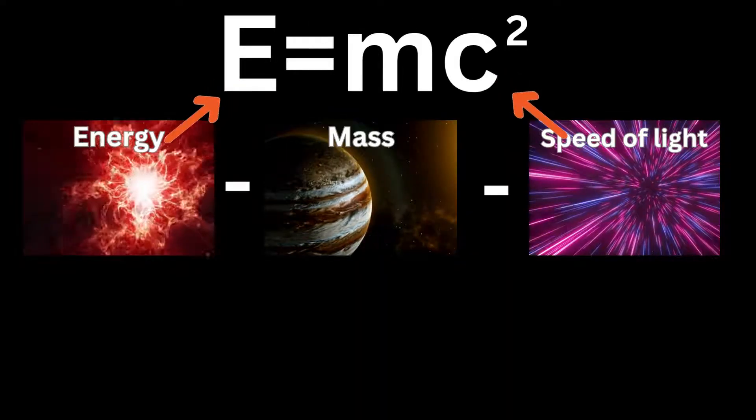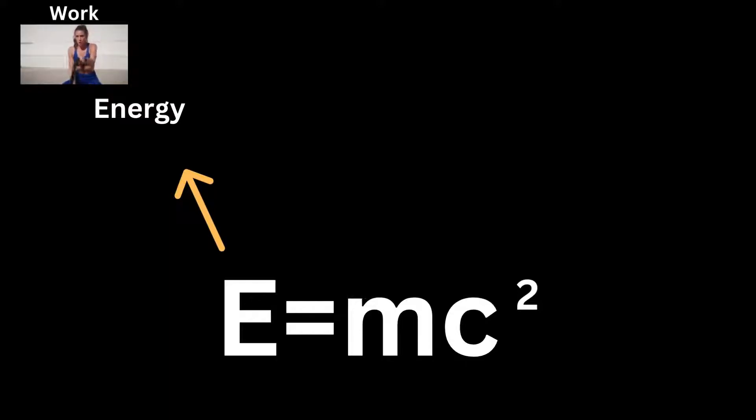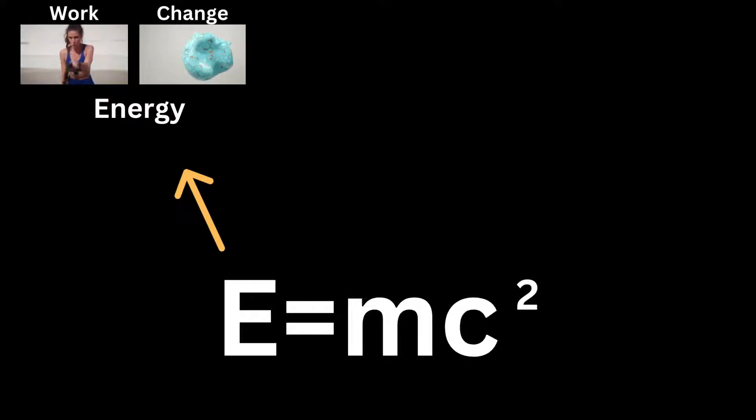Let's dissect the equation and thoroughly examine what it actually means. We will of course start with the first letter of the equation, the letter E. In physics, E, meaning energy, is the ability to do work or bring about some sort of change.